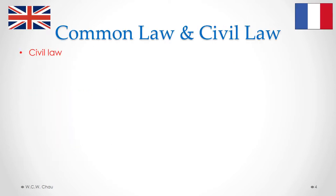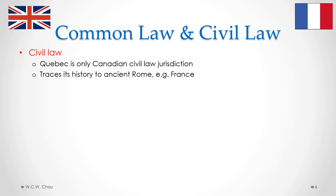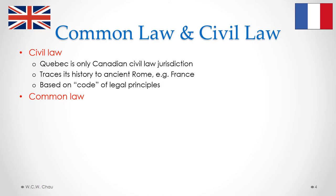In Canada we have the civil law system and the common law system. The civil law system is found only in Quebec — Quebec is the only Canadian civil law jurisdiction. In every other province we find the common law system. When we use the word jurisdiction, we mean a particular geographical area that uses the same set of laws. Each province can be considered a jurisdiction, the whole of Canada can be considered one jurisdiction for federal laws, and a municipality can also be considered a jurisdiction in terms of the bylaws it passes.